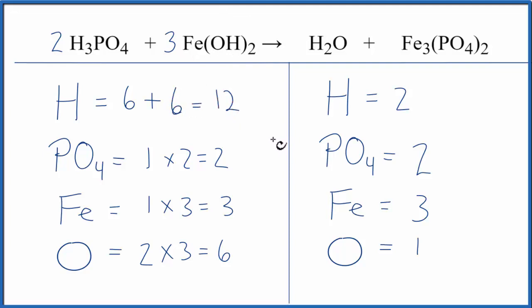All right, where are we? It looks like the hydrogens and the oxygens are off. Let's change the coefficient on water here to fix the hydrogens. I'll put a six in front of the H2O. Two times six, that's 12. And then one times six for the oxygen, that's six. And everything works out. This equation is balanced.